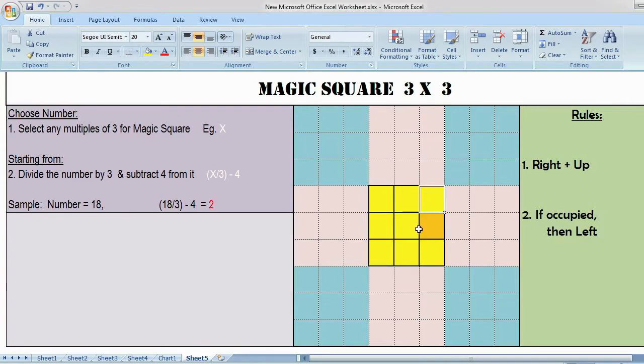In case the position where you are going to place the number is occupied, then you have to place the next number on the left side. For example, I am going to fill the next number right plus up. If this is already occupied, then I have to place the number on the left side.